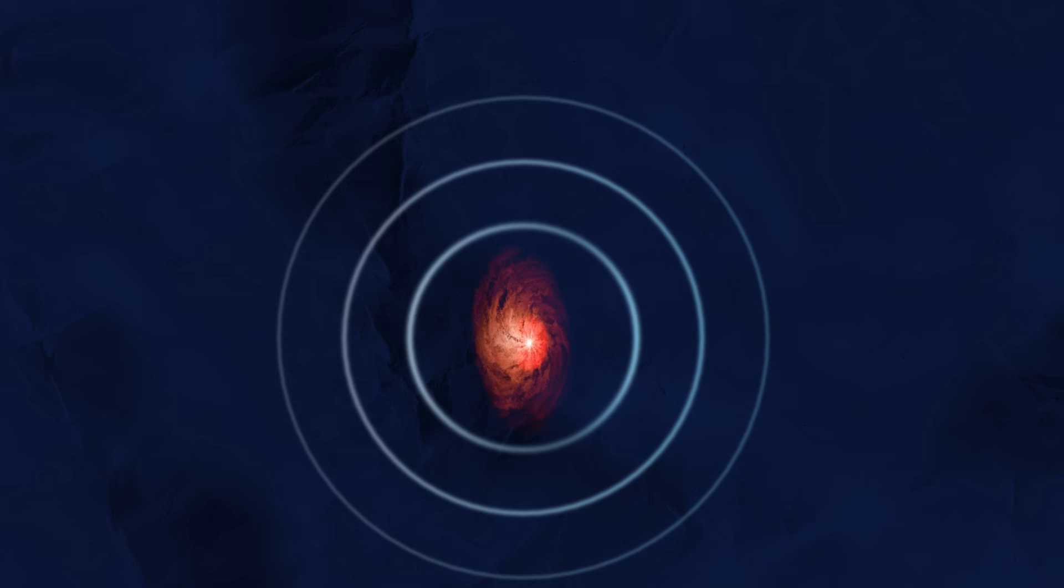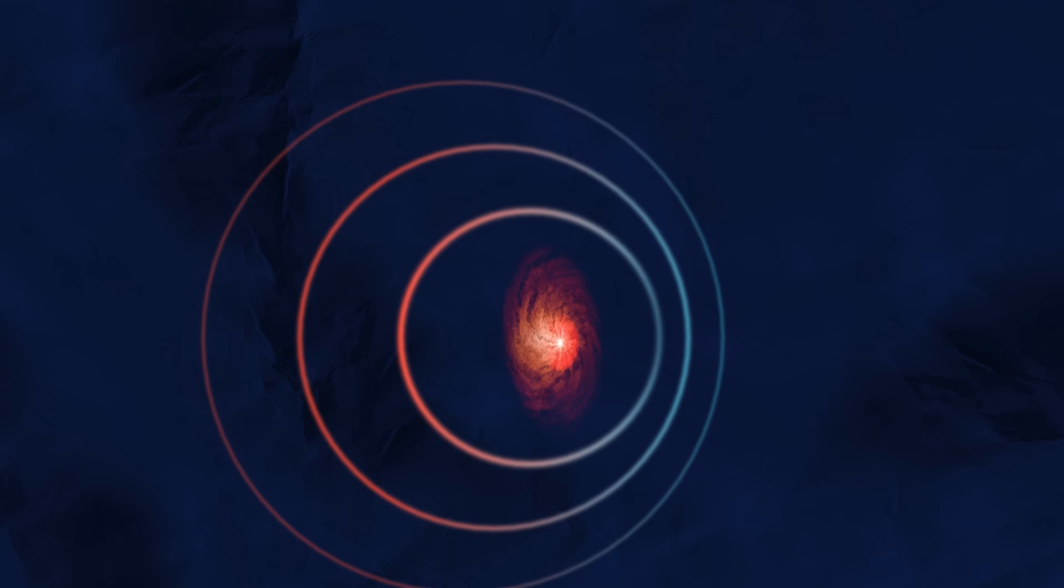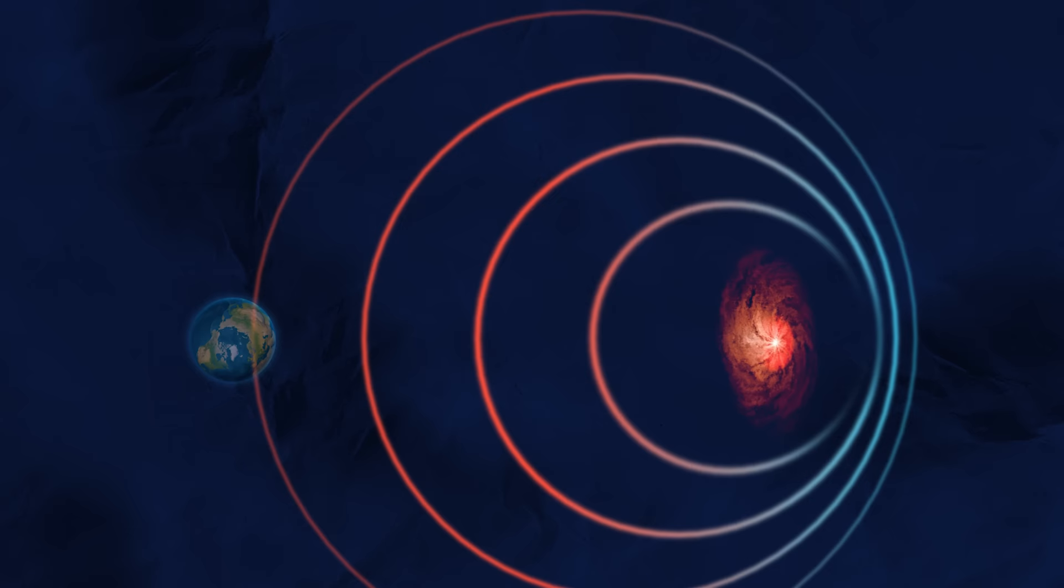And the waves at the back get stretched out. Since it's traveling away from us, we are receiving the stretched light, which has a longer wavelength and therefore a different color.